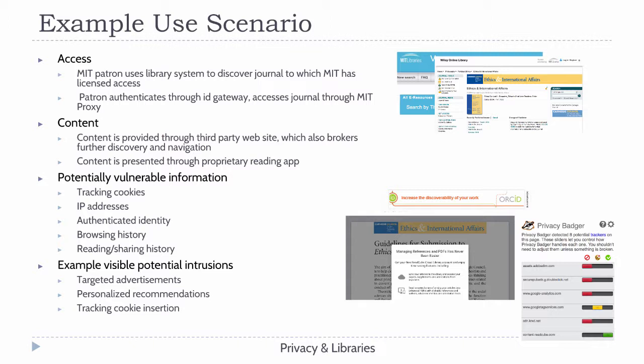Here's an example using MIT. A patron might use the MIT library system on our website to discover a journal to which MIT has provided mediated access. The patron authenticates through their ID gateway, accesses the journal through an MIT proxy, and then content is provided on a third-party website, perhaps through that proxy, which may lead to further discovery, exploration, and navigation.